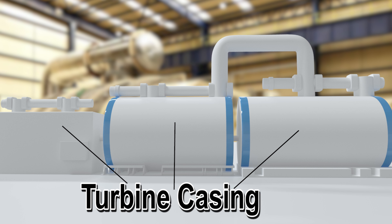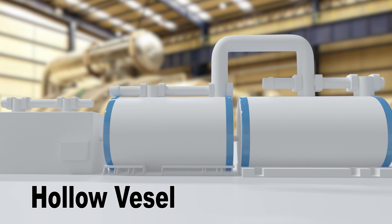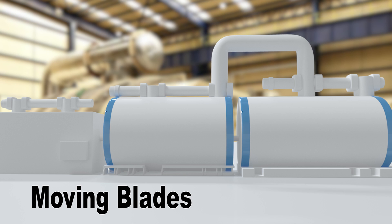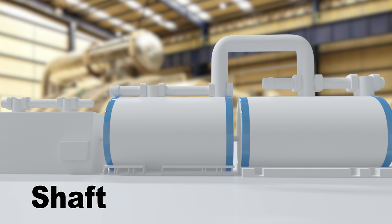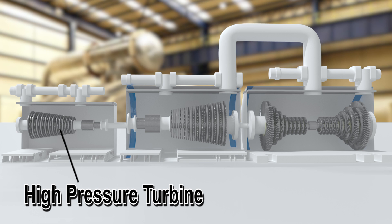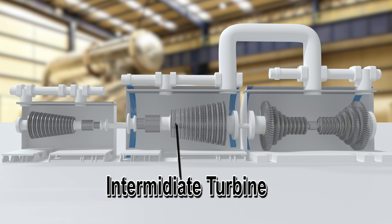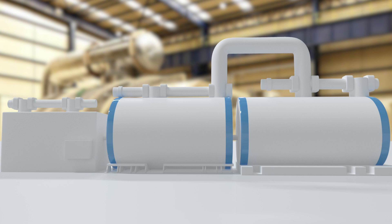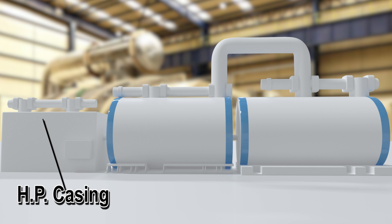First is the Turbine Casing, which is a hollow vessel that houses all the turbine internals like fixed blades, moving blades, shaft, etc. In large thermal power plants we find three types of turbines: High Pressure Turbine, Intermediate Turbine, and Low Pressure Turbine. Each turbine unit gets enclosed in separate turbine casings, called HP Casing.